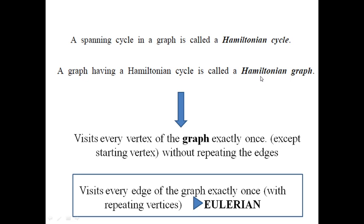In other words, we can say that a graph which visits every vertex exactly once without repeating any edges is said to be a Hamiltonian cycle. You can recall the Eulerian graph: a graph which visits every edge exactly once and repeating vertices is Eulerian, whereas Hamiltonian visits every vertex exactly once without repeating the edges.